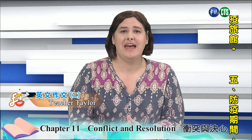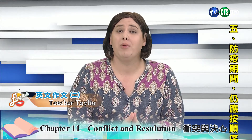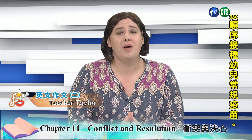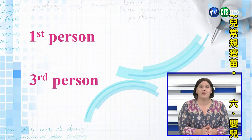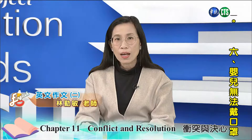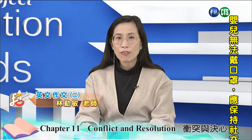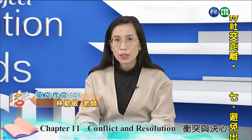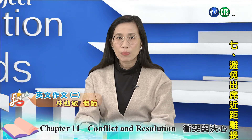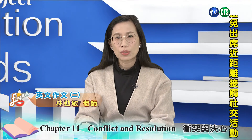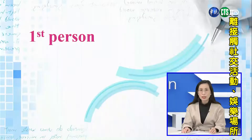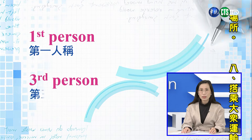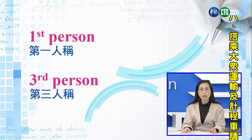Now that we have discussed the endings, let's talk about the different points of view in which a story can be written. The two most common are first person and third person. 那我们接下来谈谈怎么样用不同的观点来写故事。我们最常见的就是用第一人称first person，还有一种叫第三人称third person的方法来写故事。